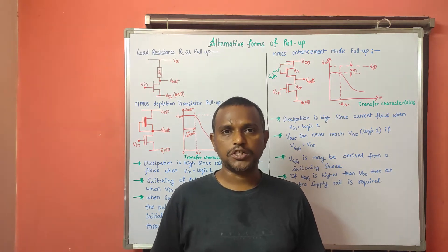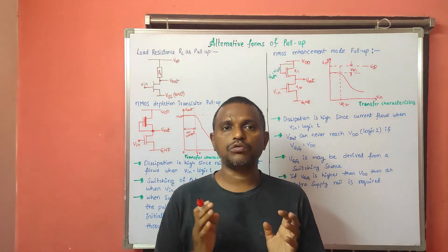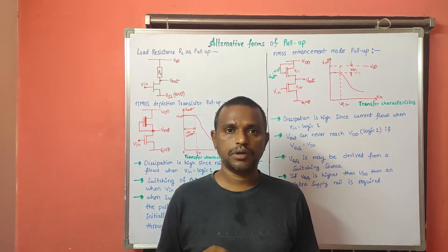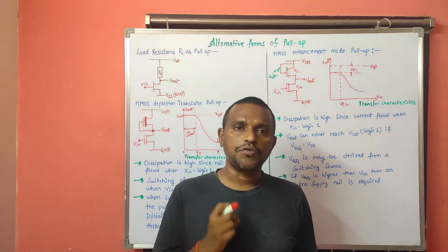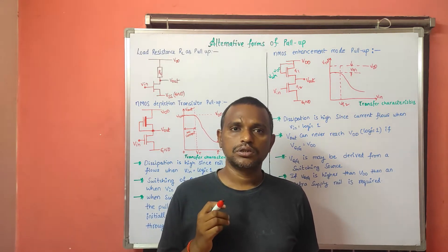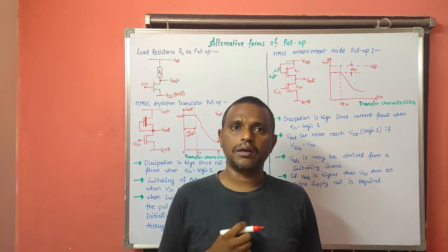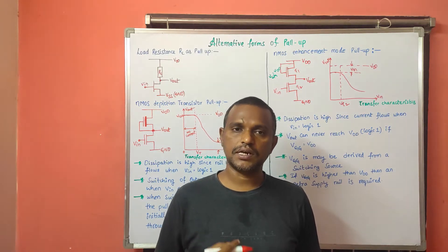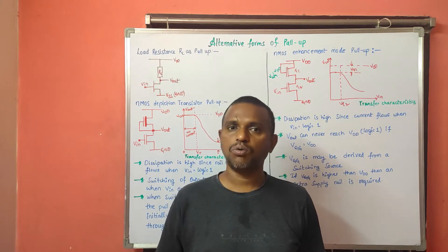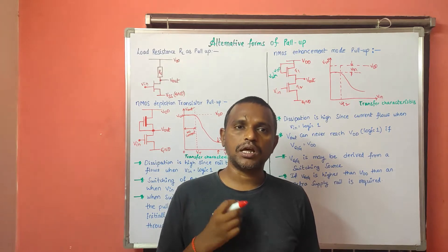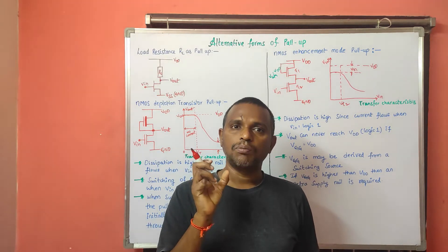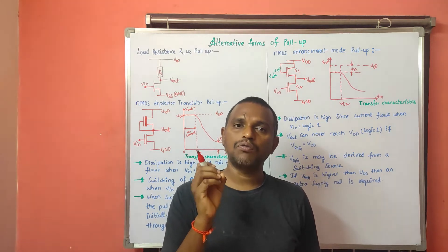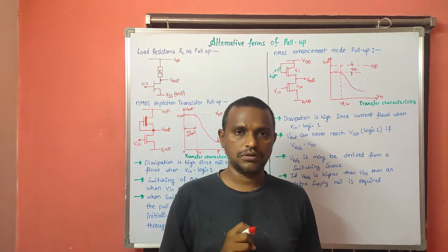Hello everyone, today I am going to explain about the alternative forms of pull-ups. Alternative forms of pull-up. So here if you consider an inverter, previously we discussed about N-MOS inverter. In that one the upper transistor is called as pull-up transistor and the lower transistor is called as pull-down transistor. So that pull-up transistor or pull-up device, we have four types of pull-ups.